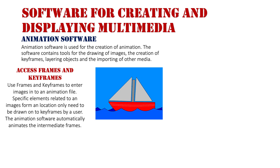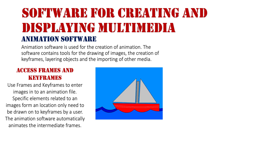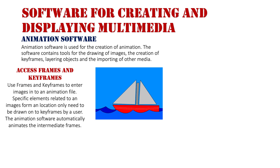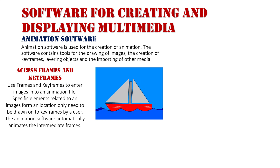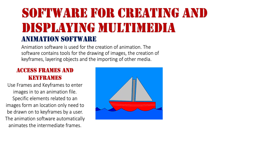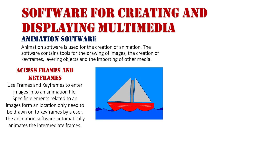The animation software automatically inserts the intermediate frames — the frames between keyframes — based on where the object starts in one keyframe and ends in the other. It figures out what the intermediate frames would be and moves the object or changes its shape accordingly.